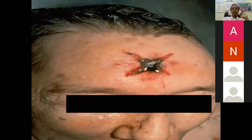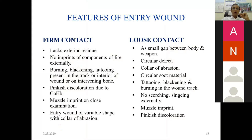Features of contact wound: firm contact lacks external residue on the outside. Burning, blackening, and tattooing are present in the wound tract or on intervening bone. Pink discoloration is due to carboxyhemoglobin (carbon monoxide). Muzzle imprint is present on close examination. Entry wound has variable shape with a collar, due to the gases. Loose contact — a gap between body and weapon — shows circular defect. In firm contact, the defect may be stellate or star-shaped, with collar of abrasion and circular soot.